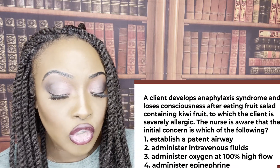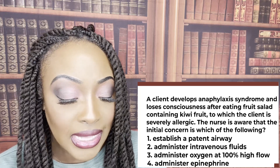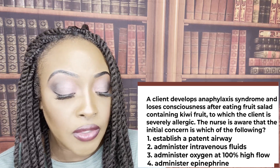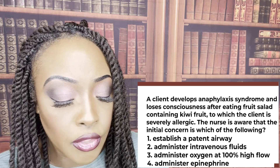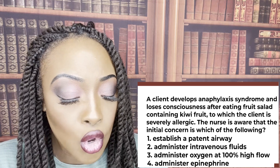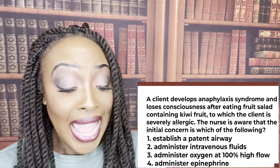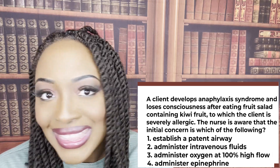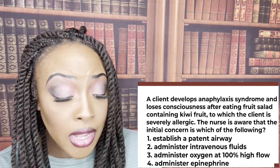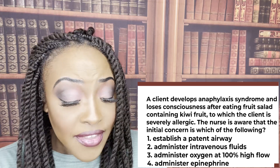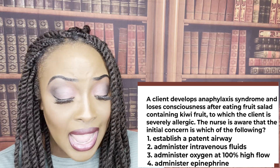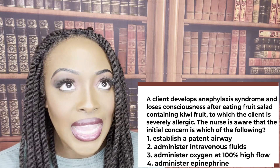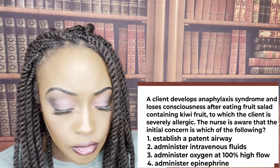A client develops anaphylaxis and loses consciousness after eating a fruit salad containing kiwi, to which the client is severely allergic. The nurse is aware that the initial concern is which of the following? One, establish patent airway; two, administer IV fluids; three, oxygen 100% high flow; or four, administer epinephrine? The correct answer is one — ABC: airway, breathing, circulation. First, establish a patent airway and intubate immediately. Then give 100% high-flow oxygen, then administer epinephrine, and lastly administer IV fluids as needed.